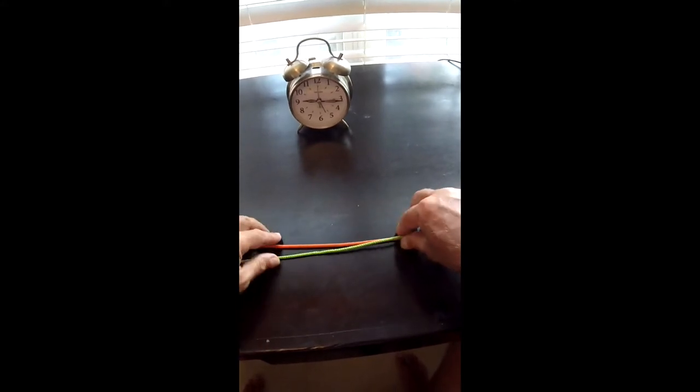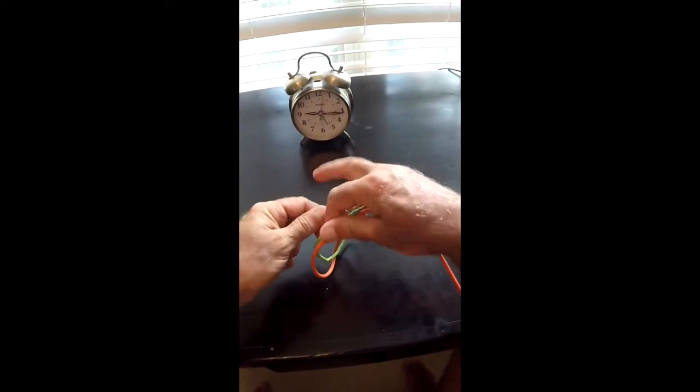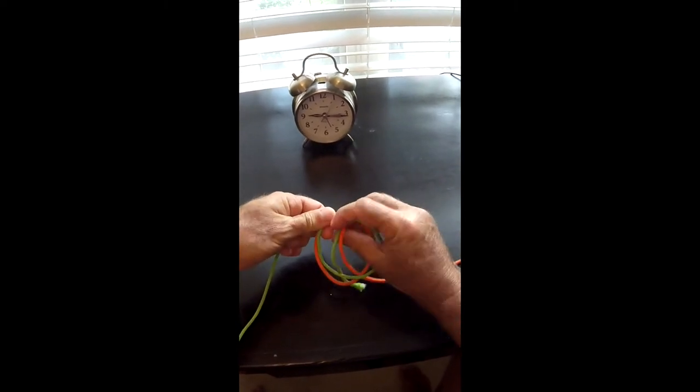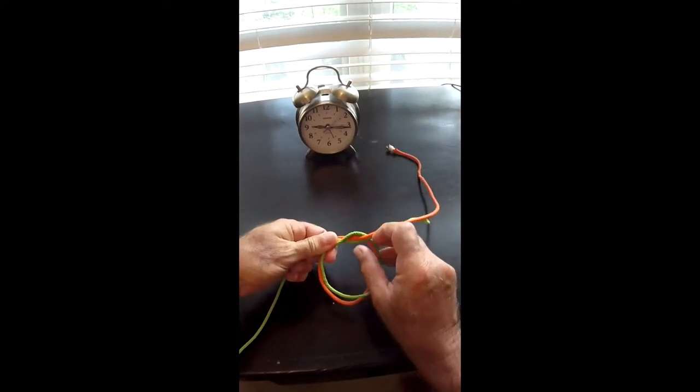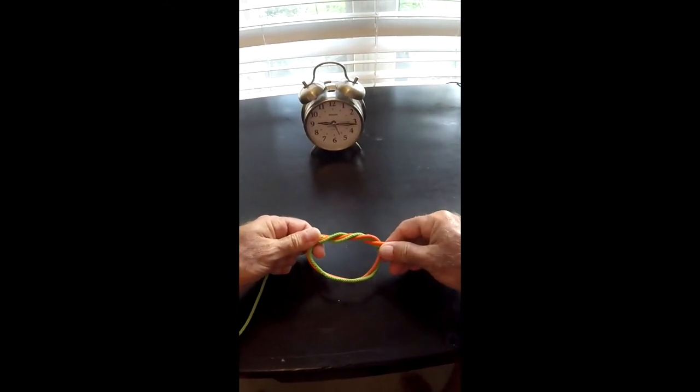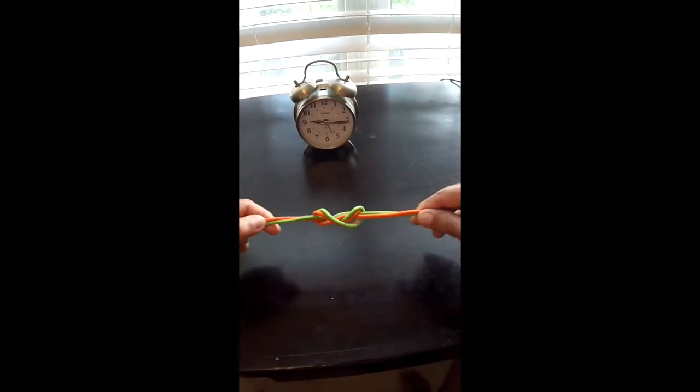All you're going to do is make a circle just like this and bring the lines together through the circle three different times. I'm only going to do it two because it's not going to cinch down because I'm using paracord. Pull it together.